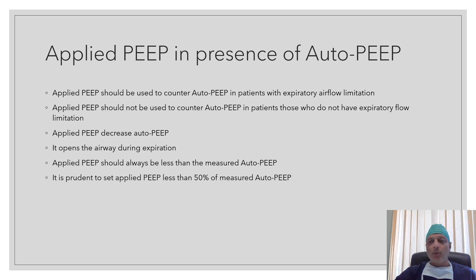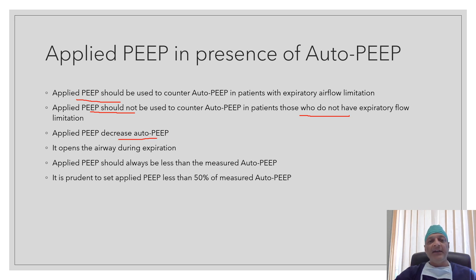Now we will discuss how to counter auto PEEP with applied or external PEEP. Applied PEEP should be used to counter auto PEEP in patients with expiratory airflow limitations only, and it is particularly useful for those patients where airway collapses during expiration, such as in COPD patients. Applied PEEP should not be used to counter auto PEEP in patients who do not have expiratory airflow limitations, as it may be harmful. Applied PEEP decreases auto PEEP by opening the airways during expiration, which helps expiratory flow. Applied PEEP should always be less than the measured auto PEEP — it is prudent to set applied PEEP at less than 50% of the measured auto PEEP; for example, if measured auto PEEP is 5, then applied PEEP should not be more than 2.5.